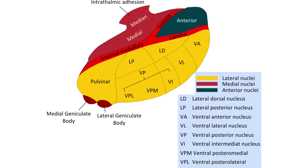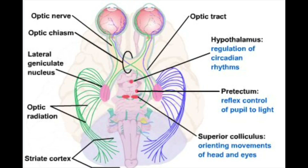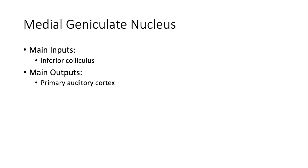Moving on to the medial geniculate and the lateral geniculate — sometimes called body and sometimes nucleus, so it could be MGB or MGN. You basically want to remember that lateral is vision and medial is auditory. I remember this by: L is for looking, M is for media or music or MP3. The lateral geniculate is part of the geniculostriate pathway important for visual perception. The main input is the retina and the main output is the primary visual cortex. For the medial geniculate nucleus, the main input is the inferior colliculus and the main output is the primary auditory cortex.